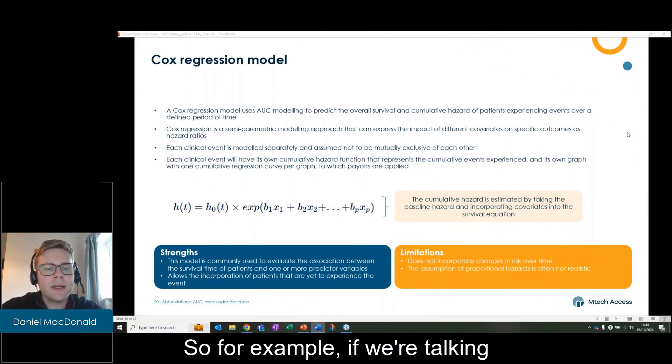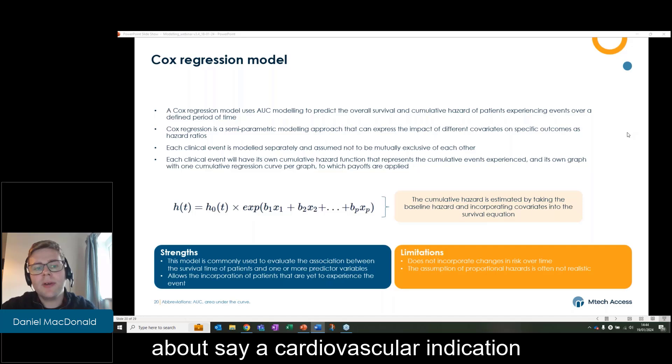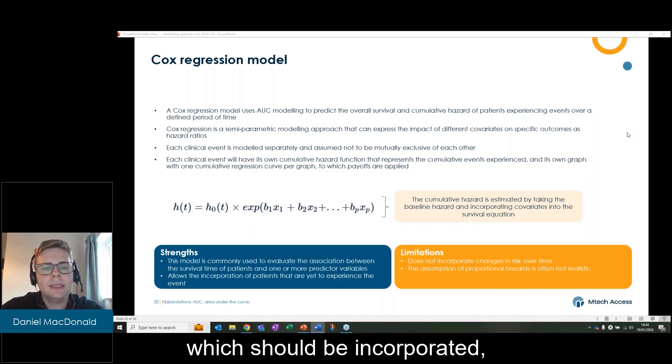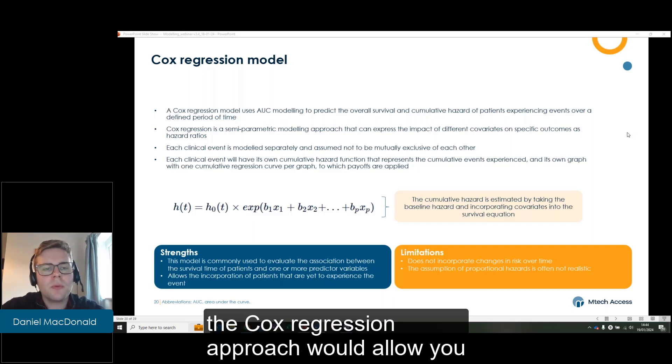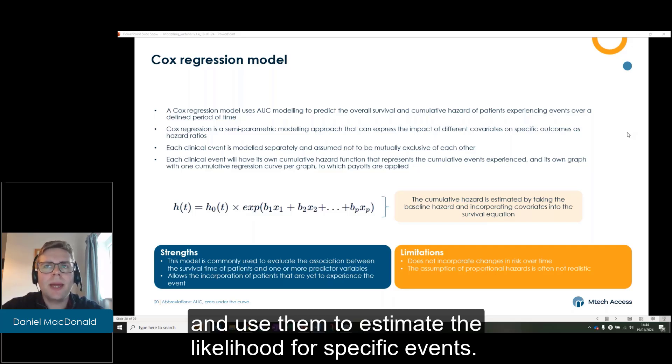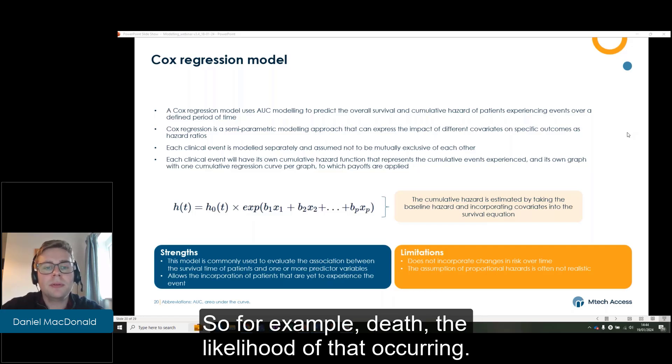For example, if we're talking about a cardiovascular indication where you've got a significant amount of cardiovascular events which should be incorporated, the Cox regression approach would allow you to incorporate the different events and use them to estimate the likelihood for specific events, for example death, the likelihood of that occurring.